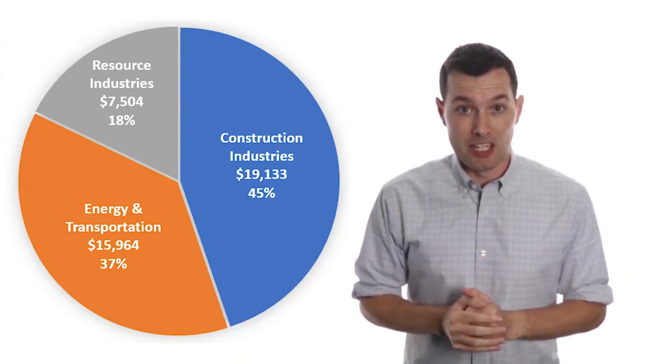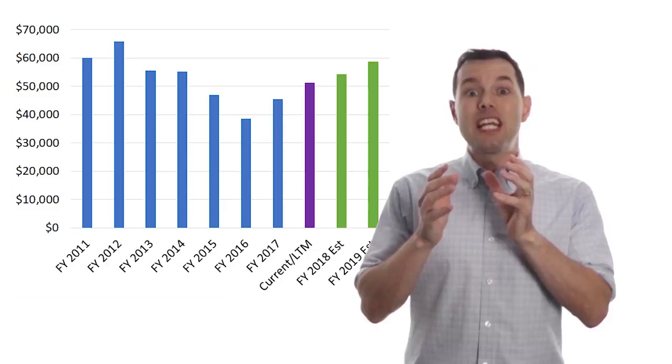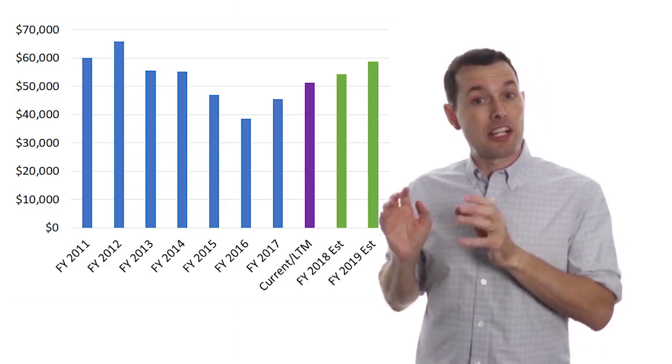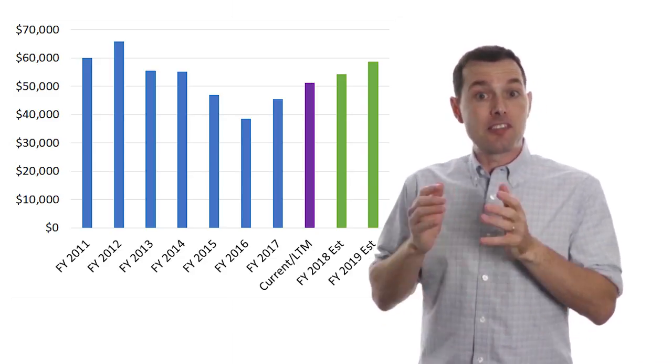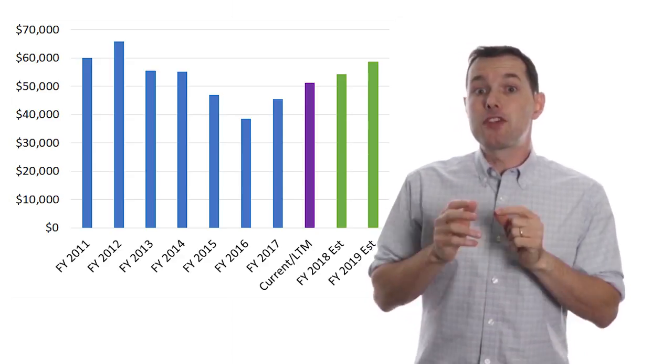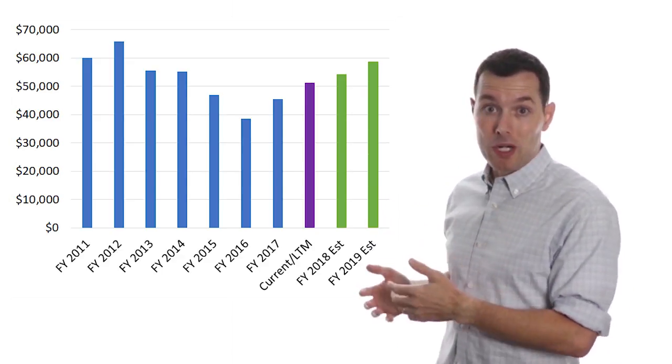Okay, so now we know what Caterpillar does. Now let's take a peek at their financial performance. In recent history, Caterpillar's revenue topped out in 2012 and declined every year until 2016, where it looks like it might have bottomed out. Since then it has been growing nicely. The purple bar is the past 12 months and the two green bars to the right are analyst estimates for 2018 and 2019.